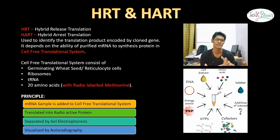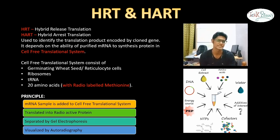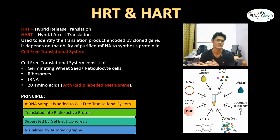The main principle for both HRT and HART is that the mRNA sample is added to the cell-free translational system and is translated into radioactive protein. In the 20 amino acids, we radiolabel the methionine so that we can identify our desired translational product. It is then separated by gel electrophoresis and visualized by autoradiography.